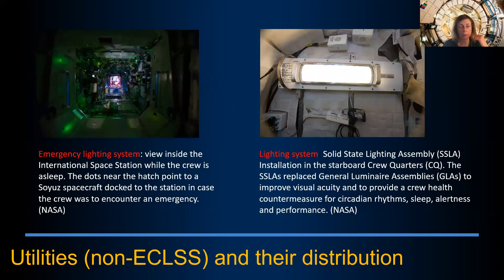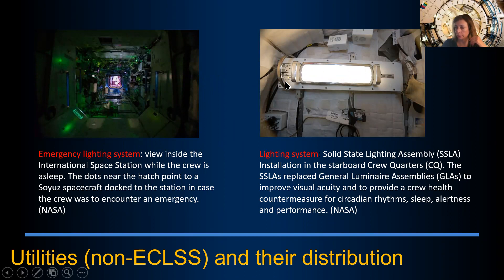Utilities and non-ECLSS systems include lighting, avionics, anything needed for communication and data collection, non-ECLSS-related gases such as CO2 capturing machines, power supplies and distribution, and data collection. Here are examples of how it looks at night on the ISS with emergency lighting systems lit up while the crew is sleeping, and the individual lighting system provided for the crew in their crew quarters that can be moved around as needed.